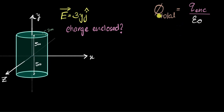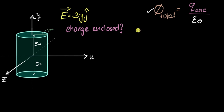Now I ask myself: if I could calculate the total flux through this cylinder, then can I calculate my charge enclosed? Yes. The charge enclosed is just the total flux multiplied by epsilon naught. So I know where to start now — my real problem is to calculate the total flux through the cylinder.